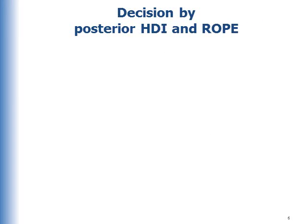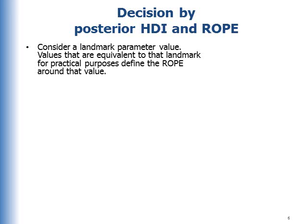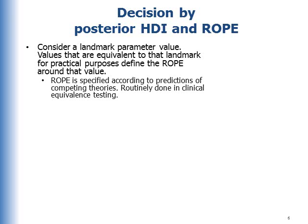Consider making the decision by the posterior HDI and the ROPE. We consider a landmark parameter value, such as 0 — a difference of 0 — or it could be an IQ score of 100. Values that are equivalent to that landmark, for practical purposes, define the ROPE around that value. ROPE means region of practical equivalence. The ROPE is specified according to predictions of competing theories, and it's routinely done in clinical equivalence testing.